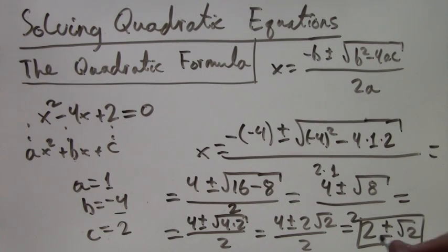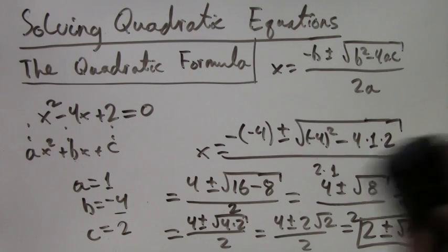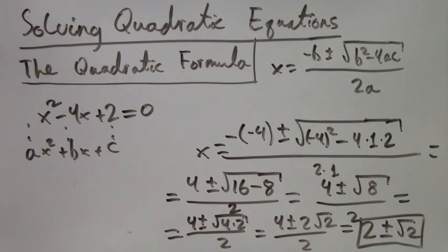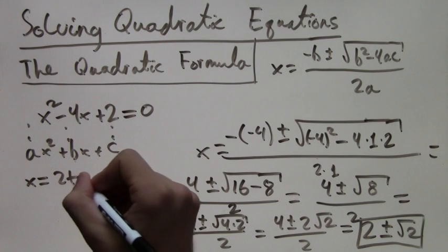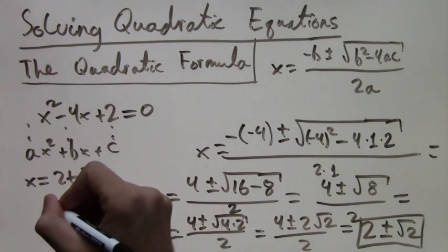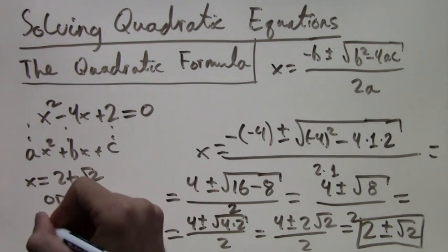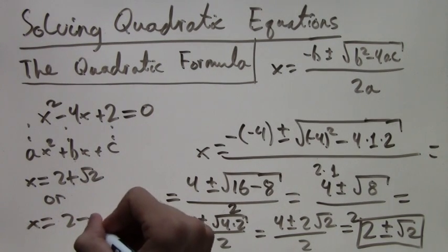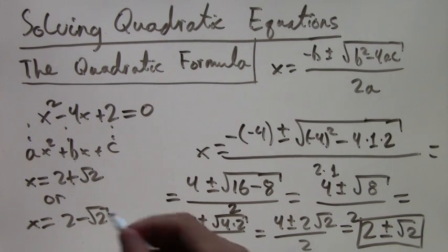So there are two solutions. These solutions are x equals 2 plus square root of 2, and x equals 2 minus square root of 2. Both of these work.